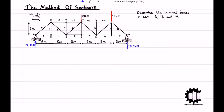Having calculated the support reaction forces, we must now divide the structure into two parts by making a cut along the bars that we're interested in. This method of cutting is very useful as there's no need to solve the entire structure, saving us a lot of time. As we are interested in bars 3, 12, and 19, those are the bars we will cut, and so the cut will follow this line.